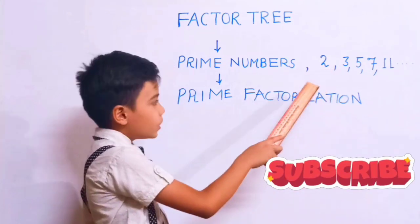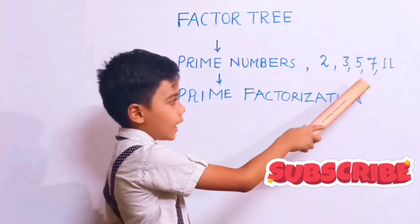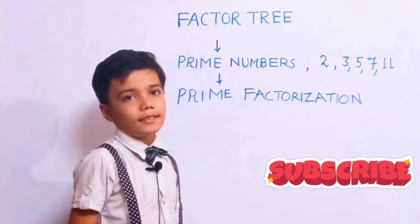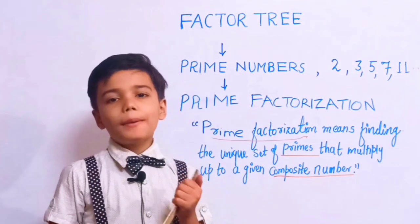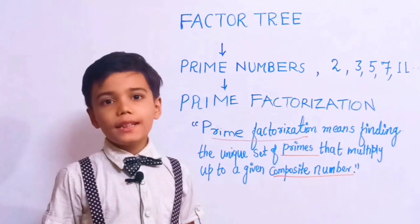For example, 2, 3, 5, 7, 11, etc. Let's know about prime factorization.